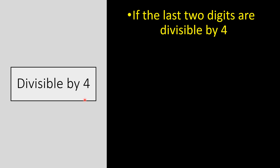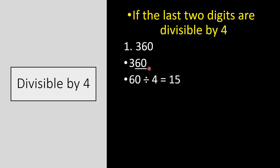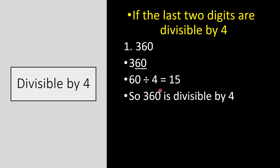Divisibility rule for 4: if the last two digits are divisible by 4, then that number is divisible by 4. For example, 360 — the last two digits are 60. Since 60 divided by 4 equals 15, 60 is fully divisible by 4, so 360 is divisible by 4.